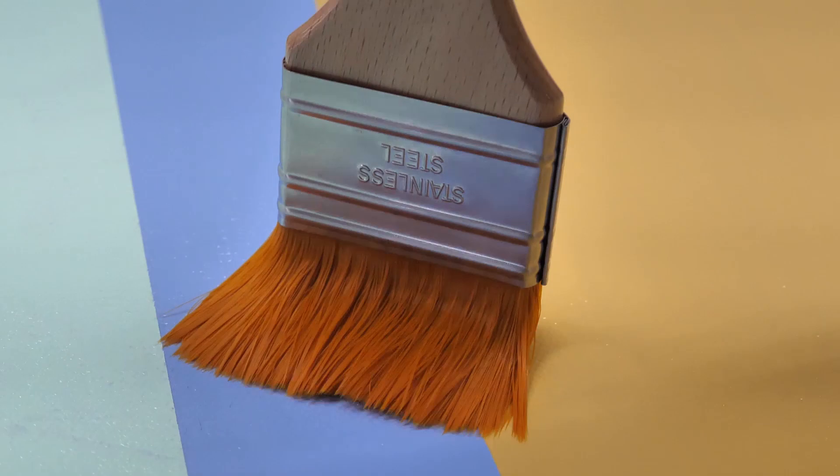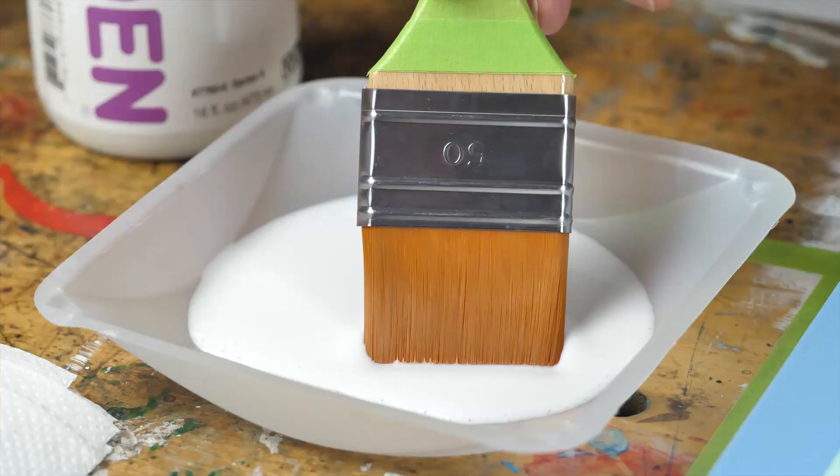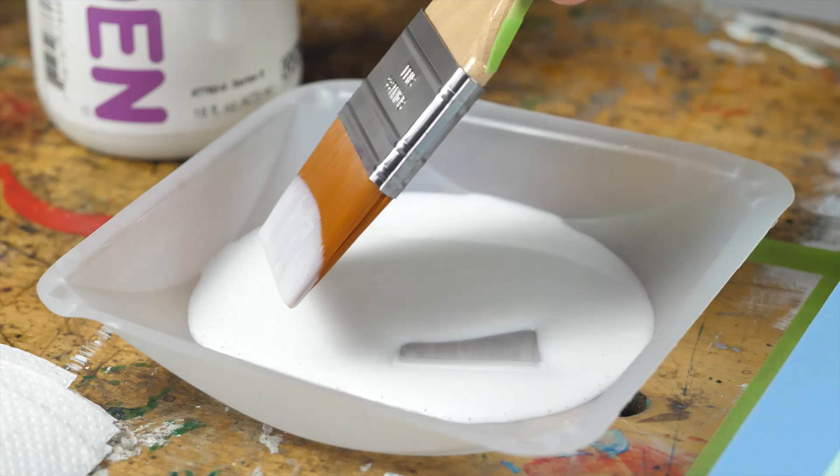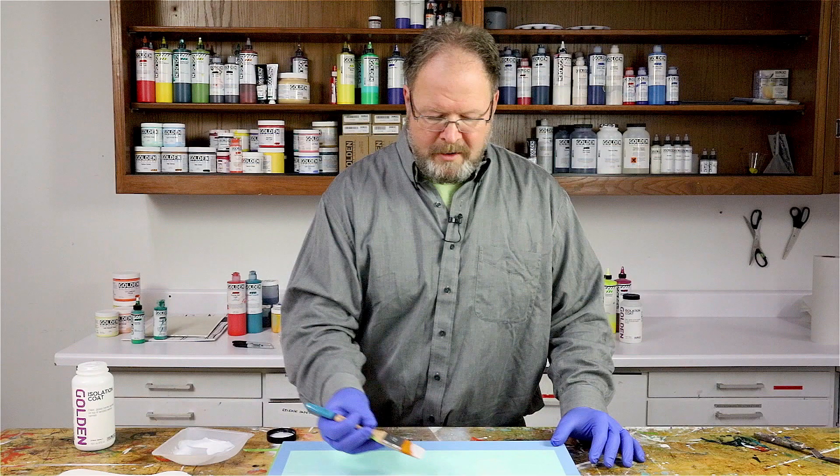A wide flat brush with short soft bristles is ideal for this application. Using a high quality brush limits the number of brush strokes and bubbles left behind in the process. Load the brush about halfway up the bristles on both sides. About every five or six inches apply some product onto the surface.